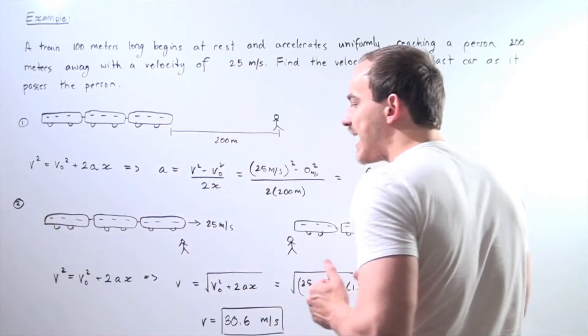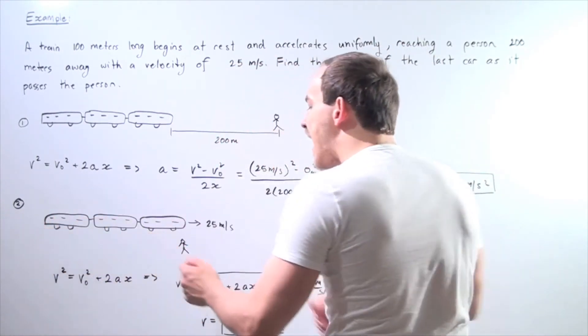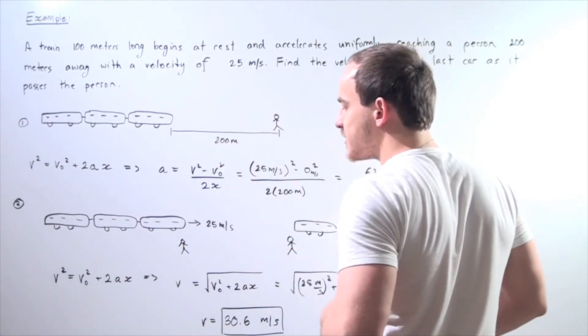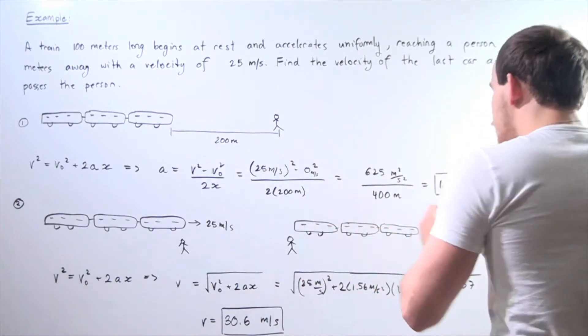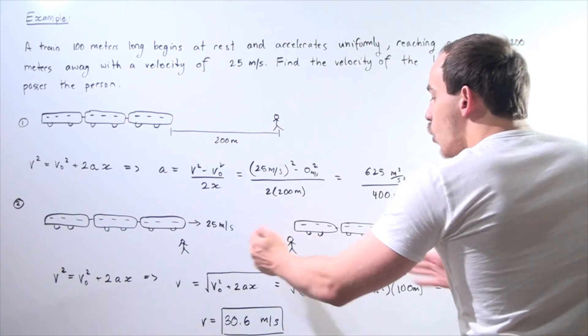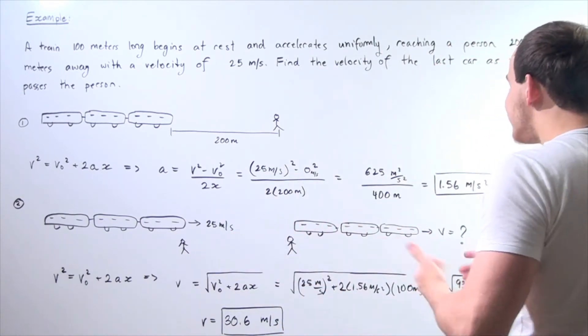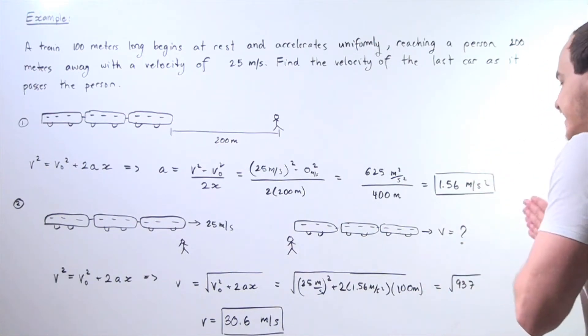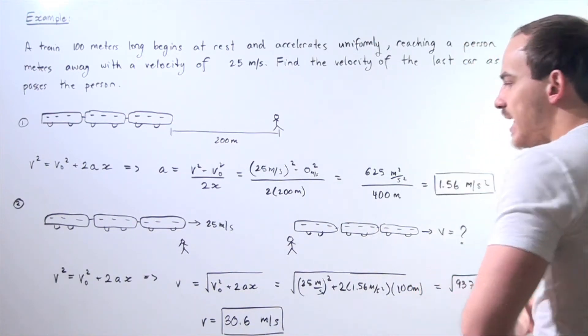Our initial condition is that the train just passes our person with a velocity of 25 meters per second. The final situation is the last car of the train will pass our person at some unknown final velocity. So we want to figure out what that velocity is.